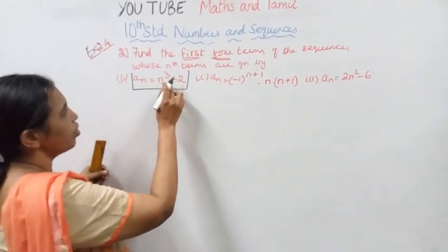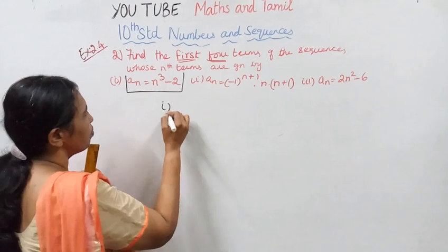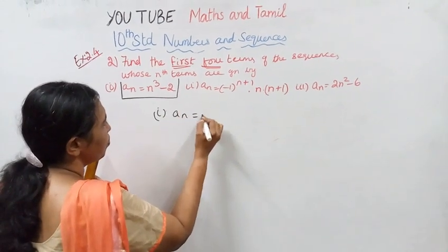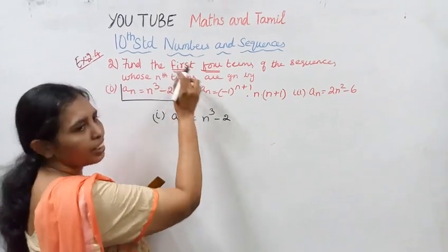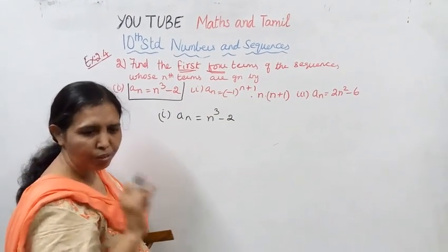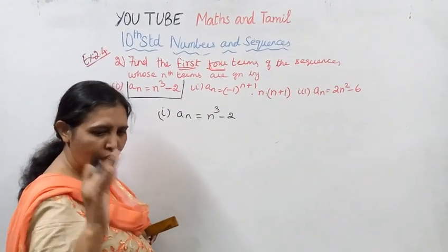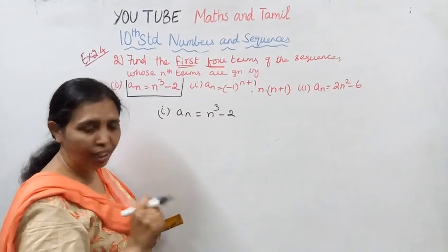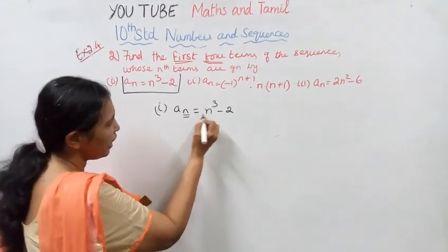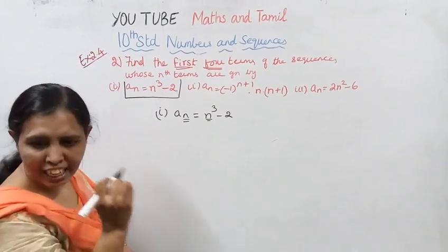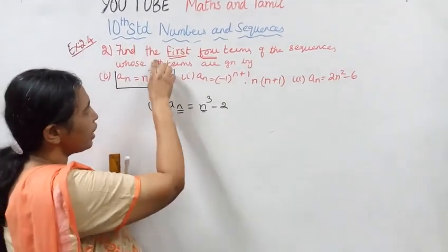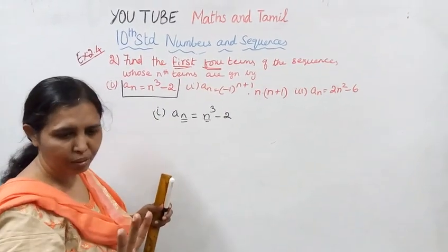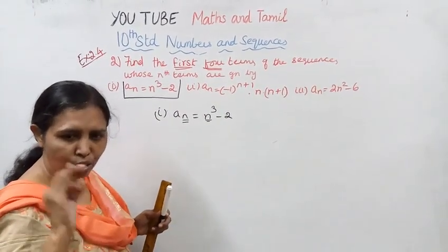First subdivision: a_n equal to n cube minus 2. First four terms - put n equals 1, 2, 3, 4 in the nth term formula.